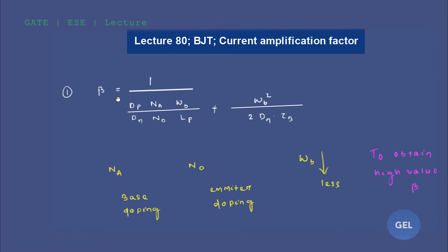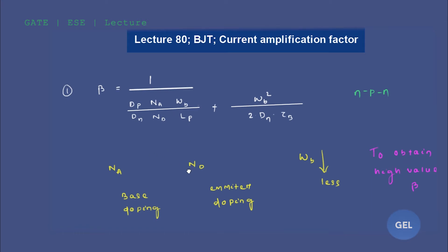Let's start with our expression of beta. Beta is nothing but (1/(Dp/Dn)) — these are the diffusion constants in case of p-type and n-type — multiplied by Na/Nd, that is the acceptor and donor impurity ratio. Wb is the base width of the base region in an NPN transistor. Wb/Lp is the diffusion length when holes get injected from p-type to n-type. Lp is the diffusion length of the injected holes, and τ_b is the minority carrier lifetime.